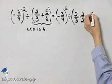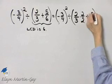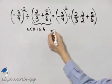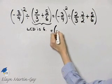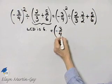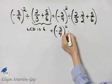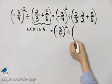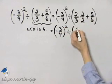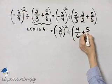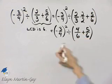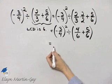And then I have plus five-sixths. Let's continue, we are working within this set of parentheses. So I have still negative three-fourths quantity squared divided by, now I have two times two which is four over six plus five over six. And now I can actually add.